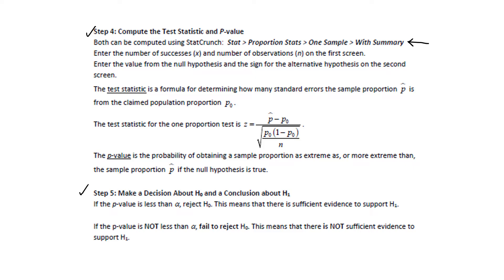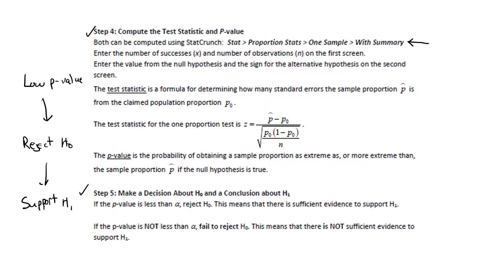There are two parts to step 5. The first is the decision about the null hypothesis. If the p-value is less than the level of significance alpha, then we reject the null hypothesis, and that means we have enough evidence to support that H1 is true.